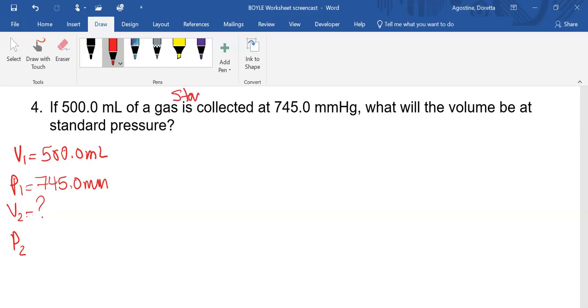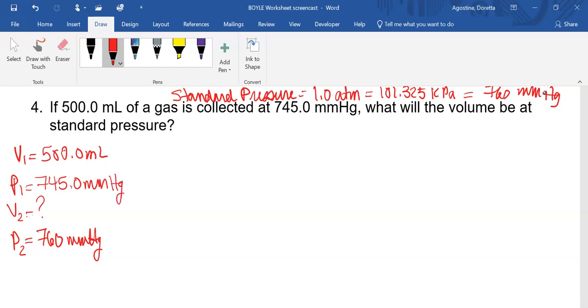Well, remember that standard pressure is defined as 1 atm and 101.325 kilopascals and 760 millimeters of mercury. Ding, ding, ding. So we're going to pick the one that works with the unit we already have. So we're going to say at standard pressure, that's 760 millimeters. Now, I'm going to try to not talk when I'm writing so that you can hear me because this stylus likes to make noise. So here goes.